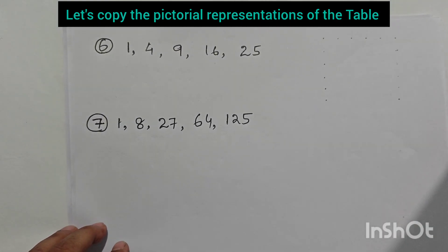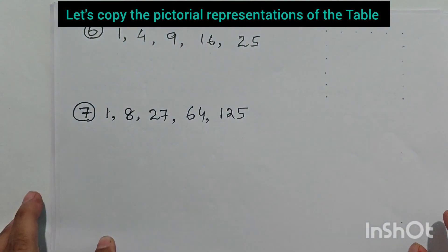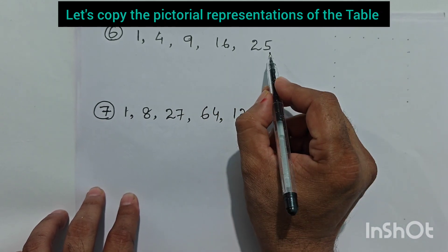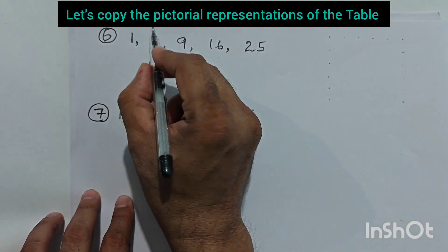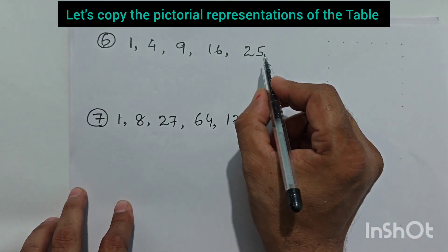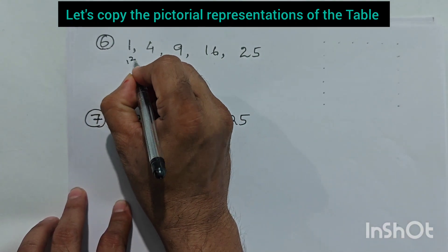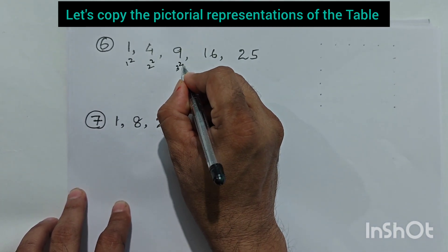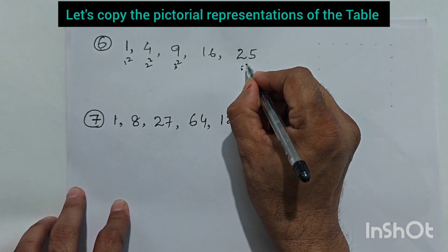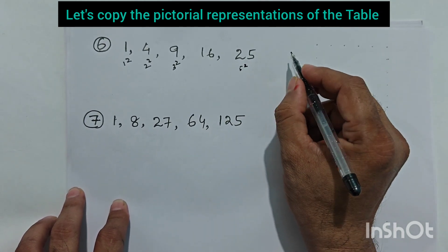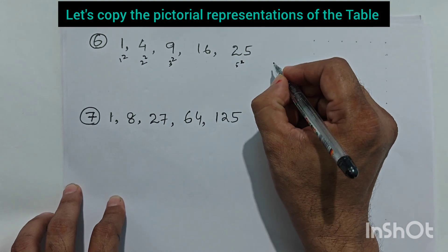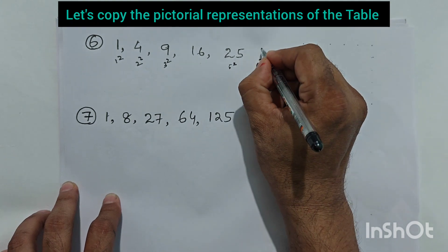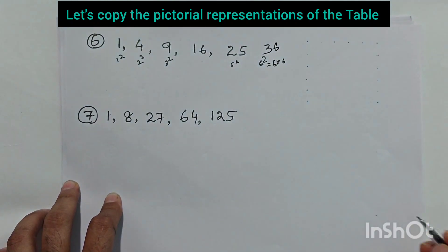The next series is squares. The numbers are 1, 4, 9, 16, 25, formed by squaring the position number. So 1 is 1², 4 is 2², 9 is 3², and 25 is 5². The next number is at position six, so 6² = 36. The next number is 36.